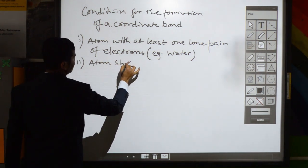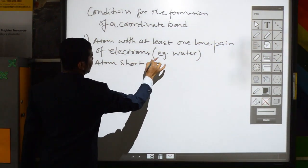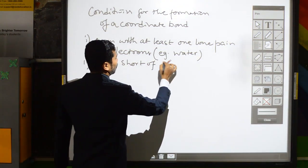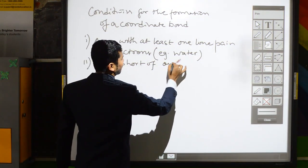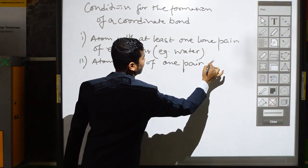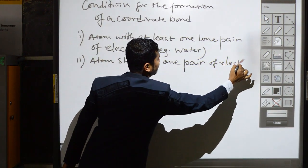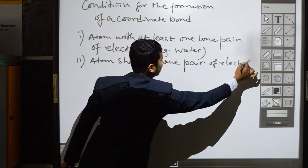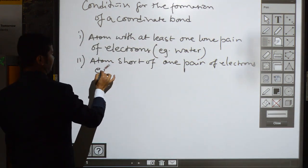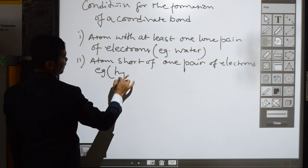Number two: an atom that is short of one pair of electrons. An example is the hydrogen ion.